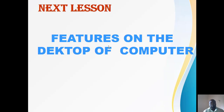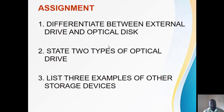In our next lesson, we are going to talk about the features on the desktop of a computer — we will navigate and explore the items found on the desktop, their uses, and their functions. Assignment: differentiate between external drive and optical disc; state two types of optical drive; and list examples of other storage devices. We'll meet again in our next lesson — stay blessed, thank you.